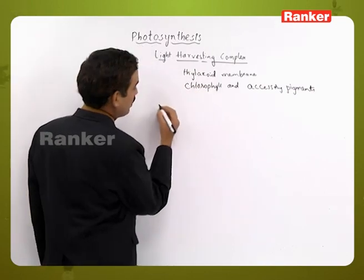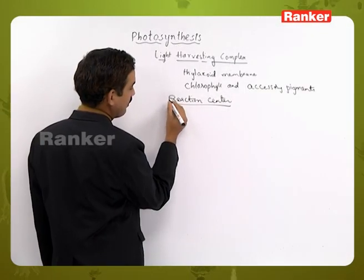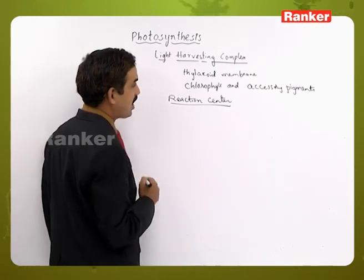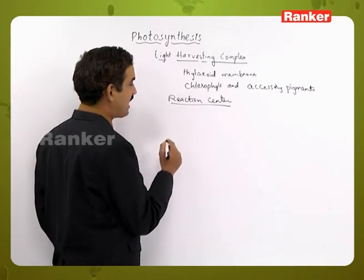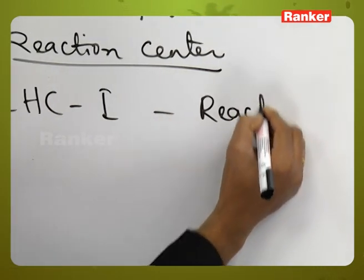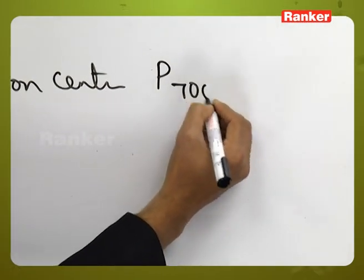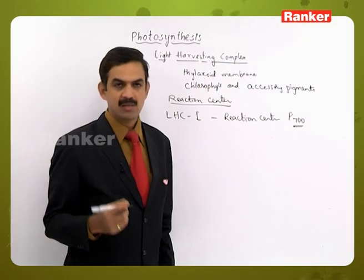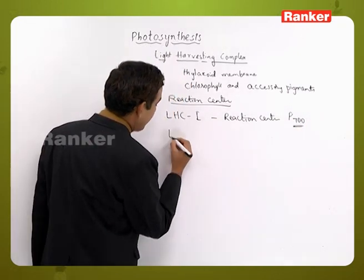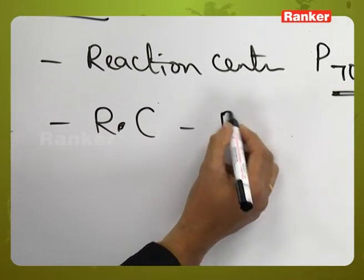The light harvesting complex contains the reaction center, which is represented based on the wavelength of light where maximum absorption occurs. There are two types of light harvesting complexes, and each has one reaction center. Light harvesting complex 1 has the reaction center P700, and light harvesting complex 2 has the reaction center P680.